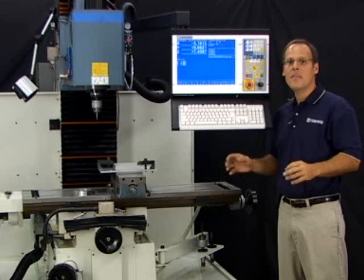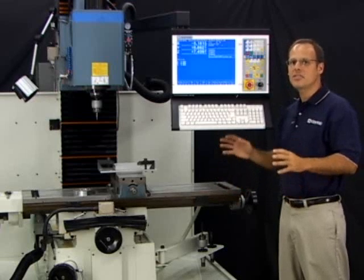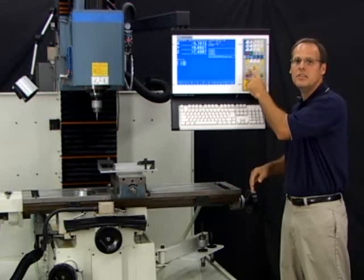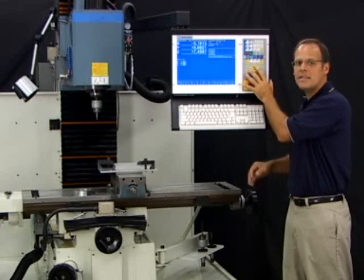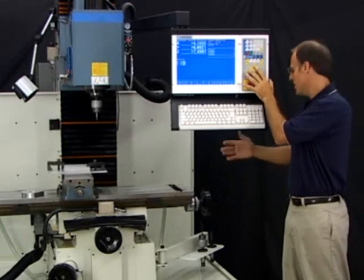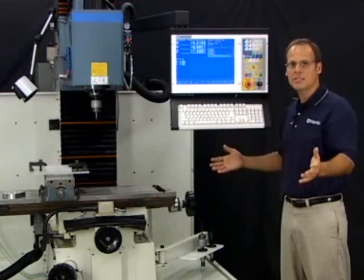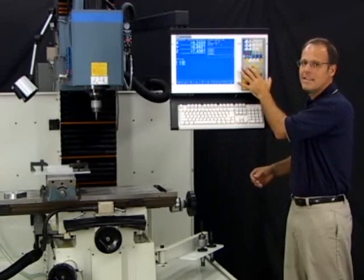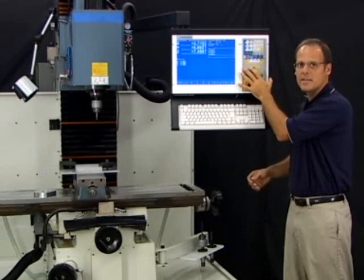A nice feature about the Centroid is it has dedicated jog buttons for each axis and each direction. Right now I'm holding down the X positive jog key. As long as I hold that down, that axis continually jogs until I take my finger off the button. Now I'm holding down the X negative jog key.